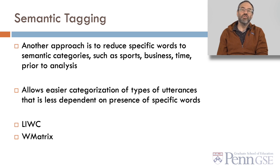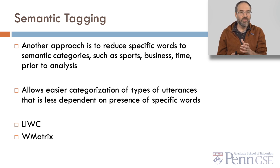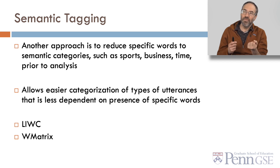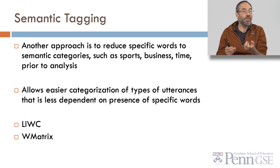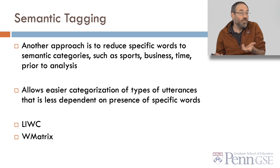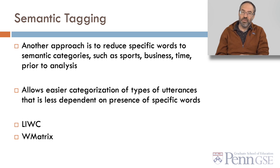Another approach is to reduce specific words to semantic categories — such as sports, business, or time — prior to analysis. This allows easier categorization of the types of utterances, less dependent on the presence of exactly specific words. The idea is that a post about basketball might be semantically similar to a post about football. One popular tool for this in the United States is Luke, and in the UK, WMatrix.